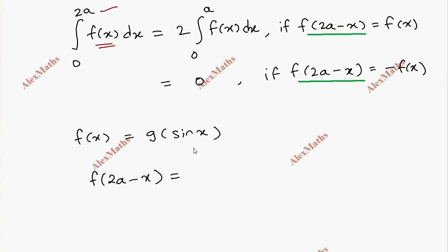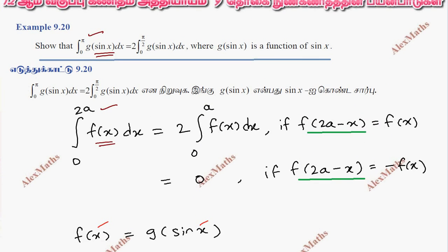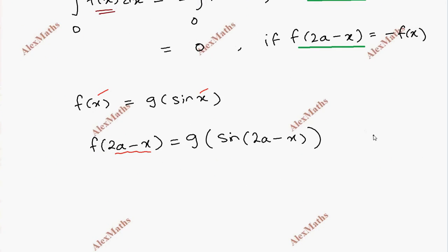Replace x with 2a minus x, so we get g of sin of 2a minus x. The upper limit of this problem is 2a equals pi. So 2a equals pi; substituting gives g of sin of pi minus x.